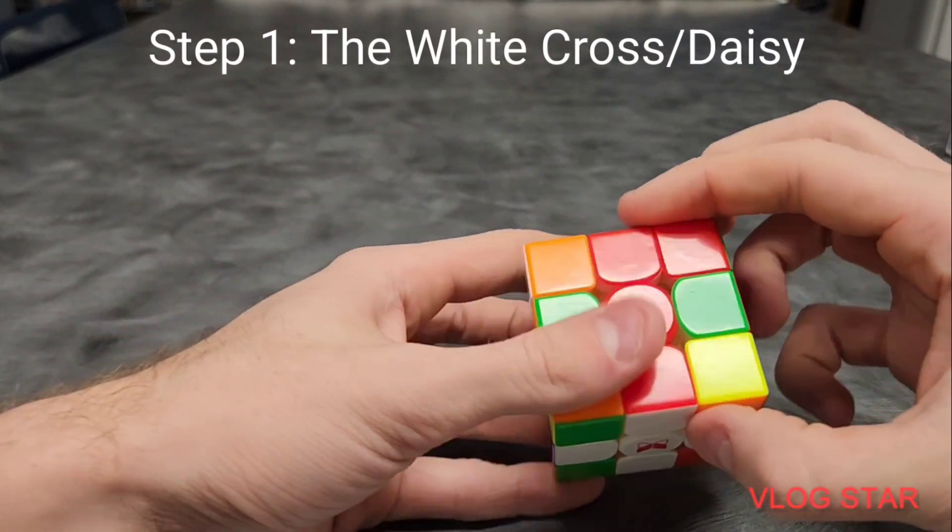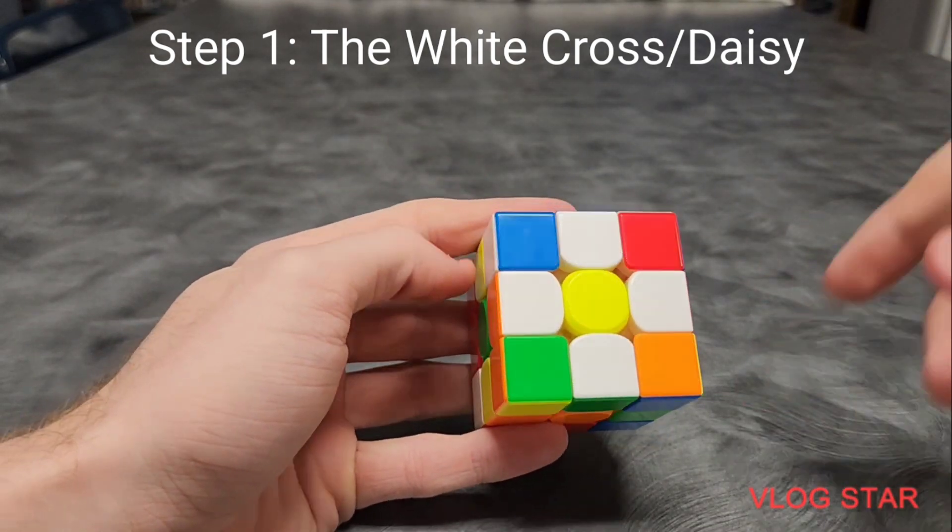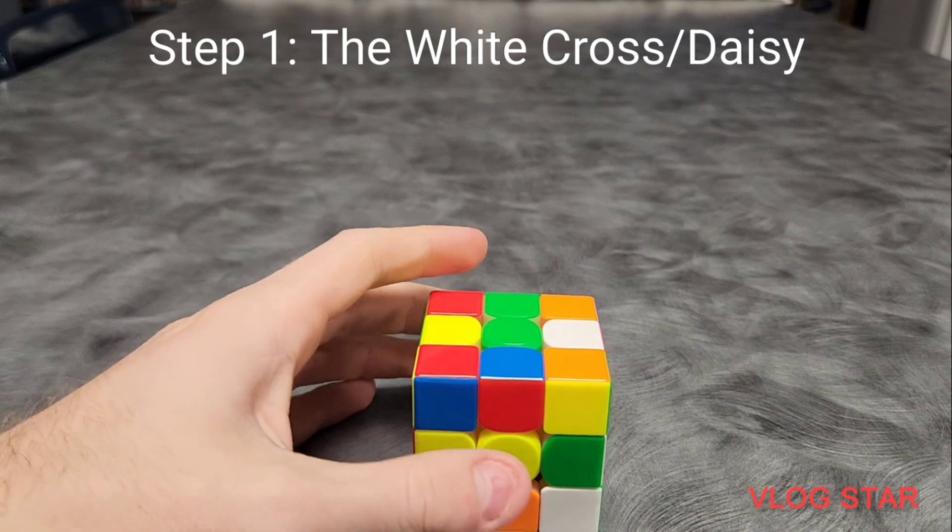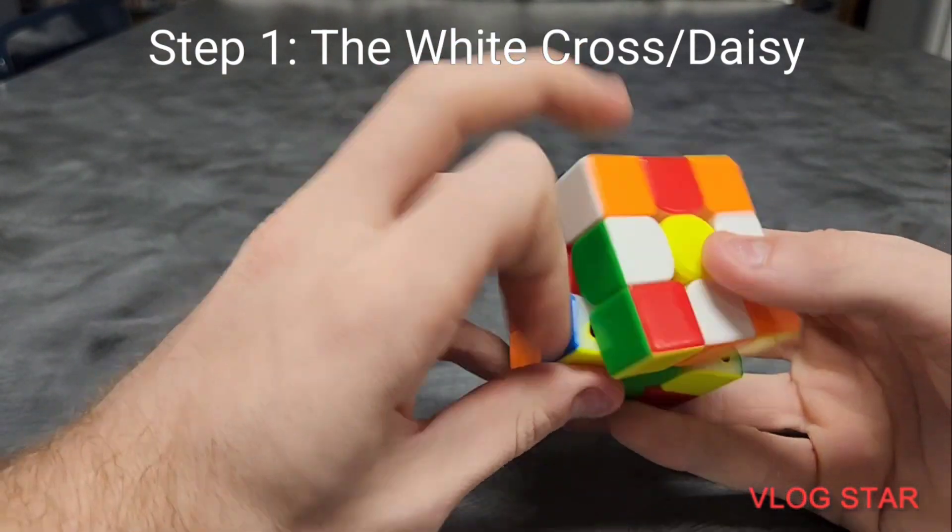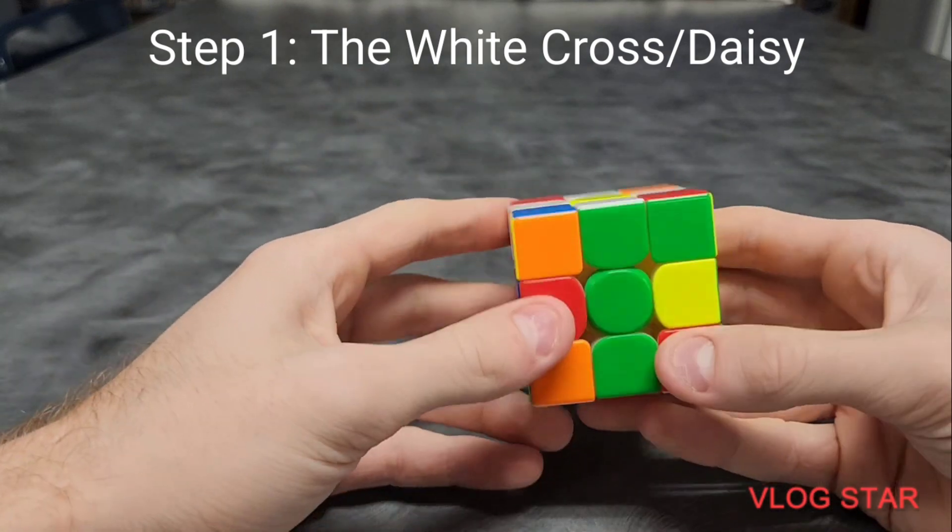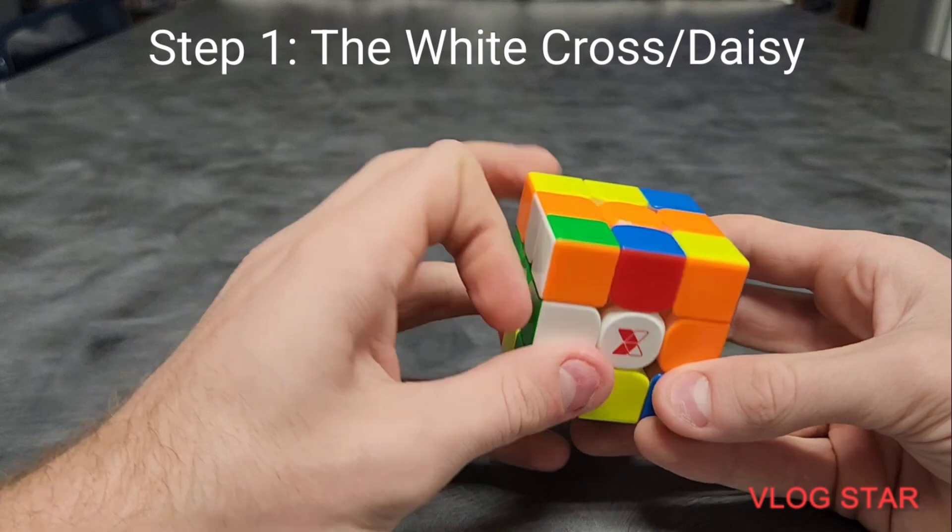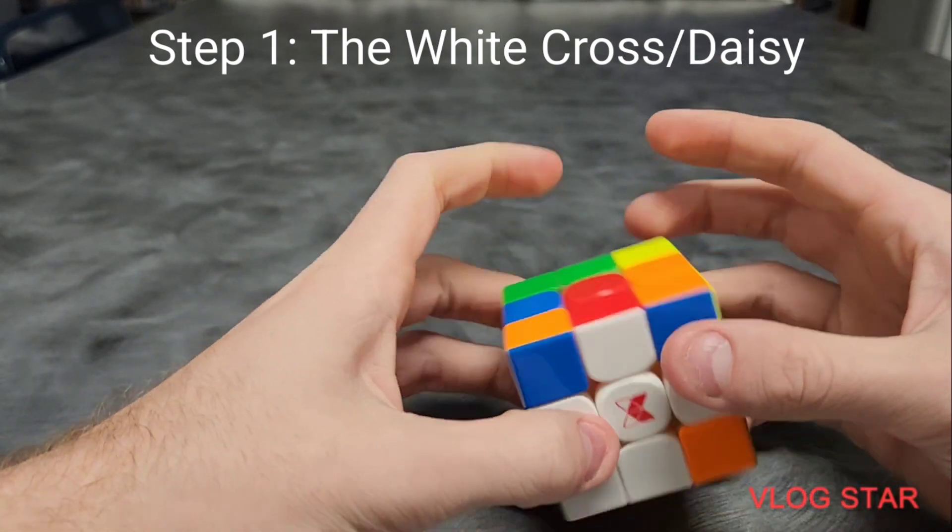This is the first step. It is called the cross. The easiest way to learn how to do the cross is to start by doing the daisy. Sadly, I do not have time to explain exactly how to do the daisy, but the basic idea is to get the white edge pieces, the ones that have two colors, matched up to the yellow center, and then match them up to their respective center pieces, and then turn that side twice. That's how you get the cross.